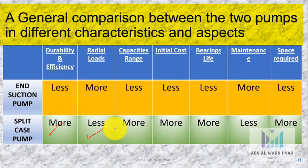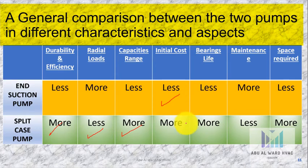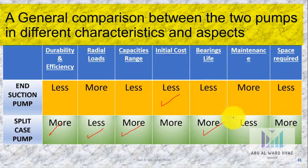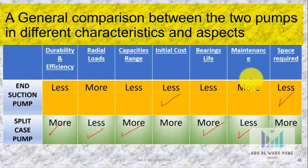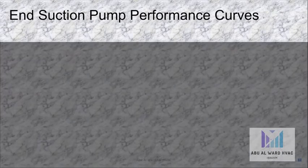For capacity range, the end suction pump has a lower range and the split case pump has a higher range — advantage: split case pump. For initial cost, the end suction pump is lower — advantage: end suction pump. For bearing life, the end suction pump is lower and the split case pump is higher — advantage: split case. For maintenance requirements, the end suction pump requires more maintenance — advantage: split case. For space required, the end suction pump requires less space — advantage: end suction pump; the split case pump requires more space.